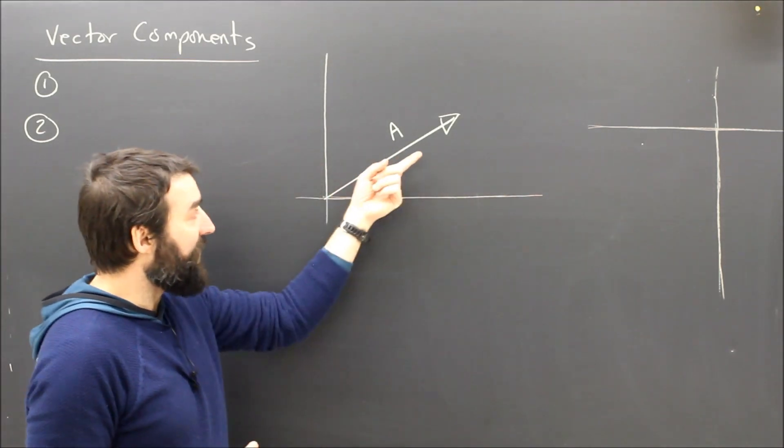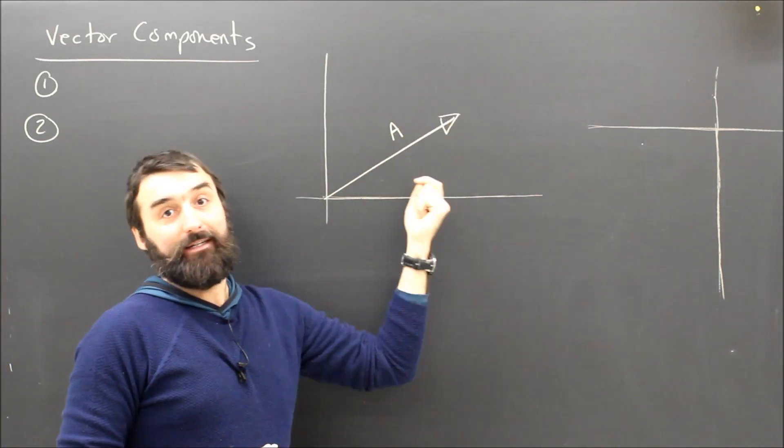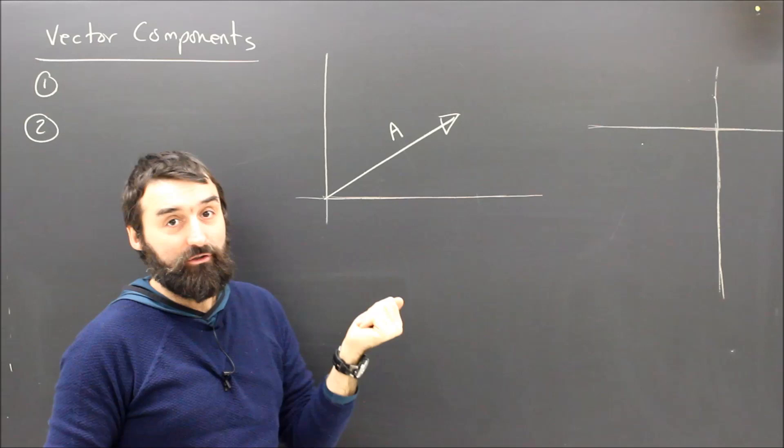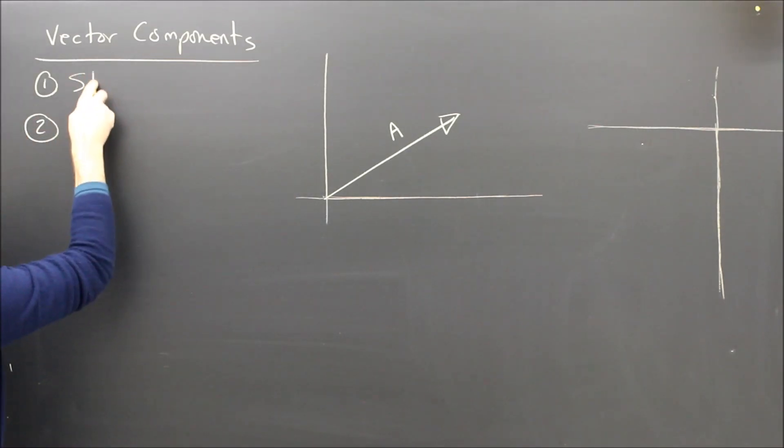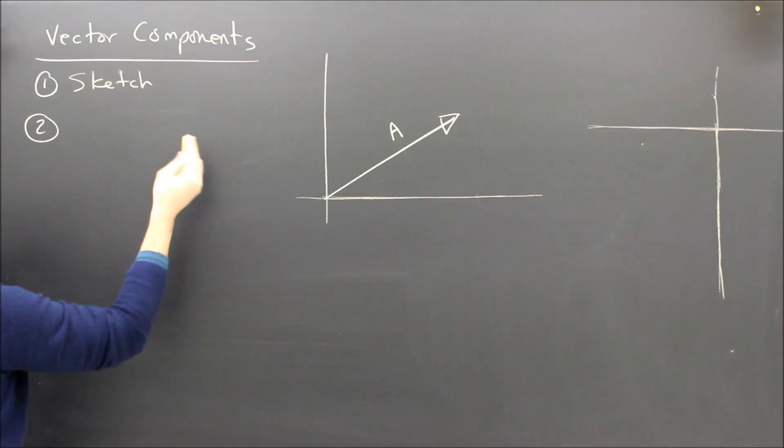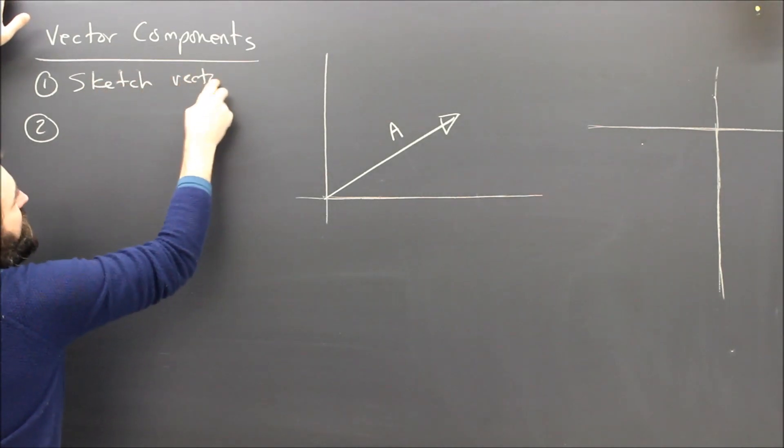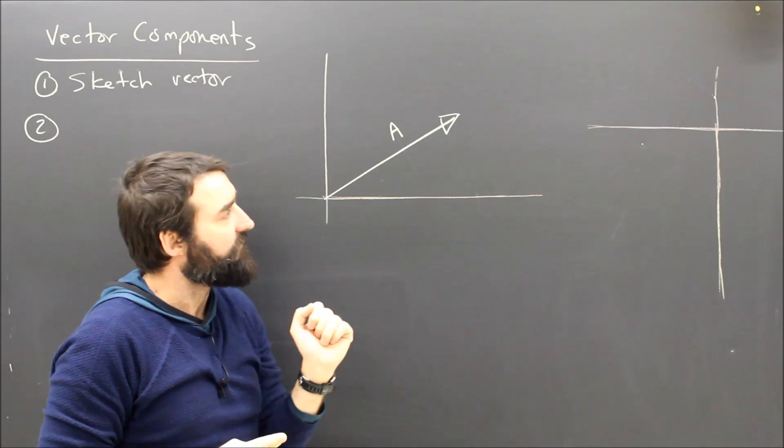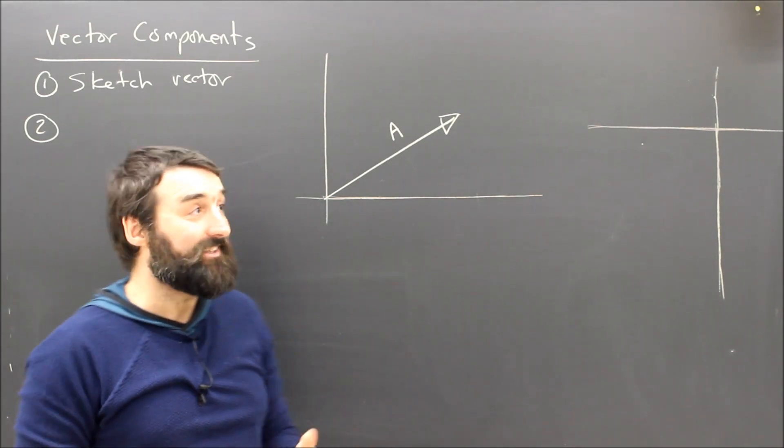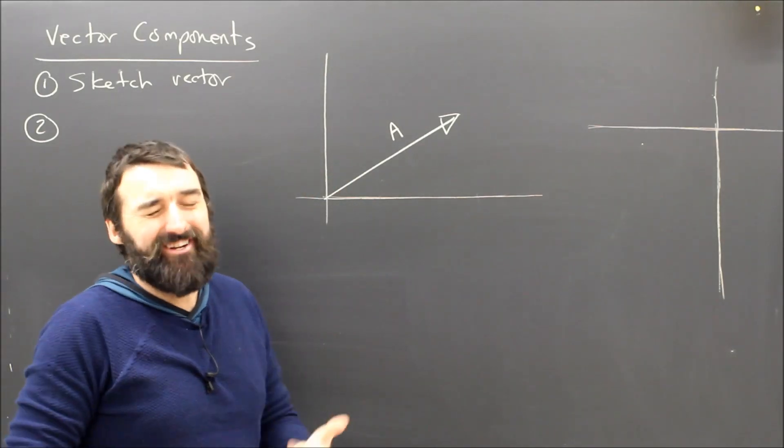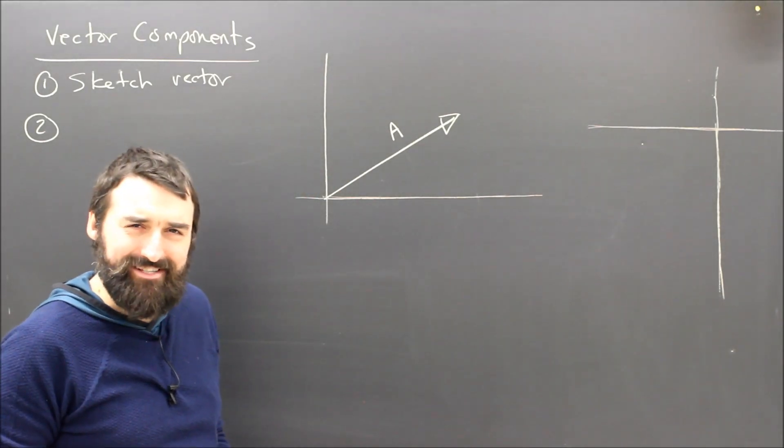You guys understand that vectors have a direction and a magnitude. They can be drawn as arrows. When you're trying to break vectors into components, that is the first step: to sketch the original vector. Now, I can't break anything into components unless I know what directions I'm interested in. Does that make sense?